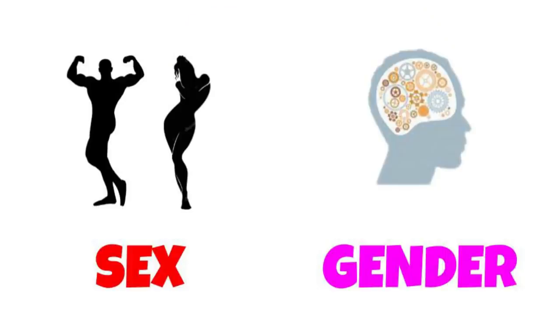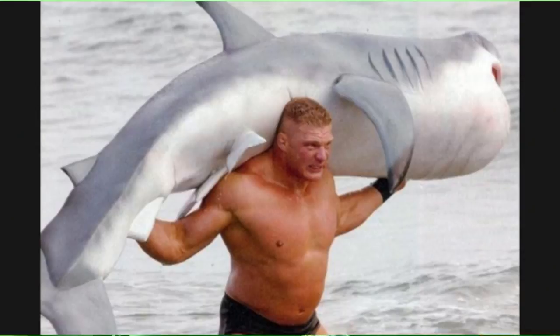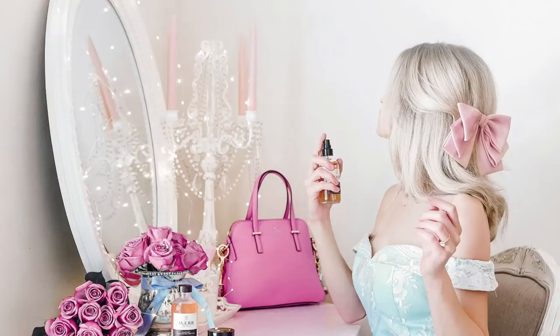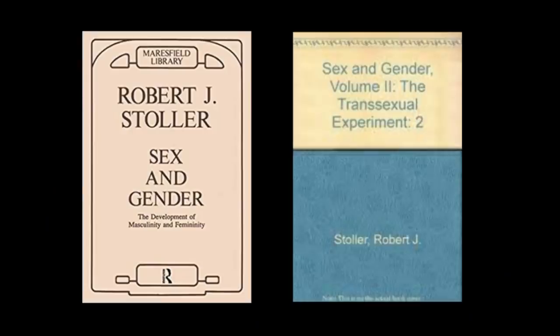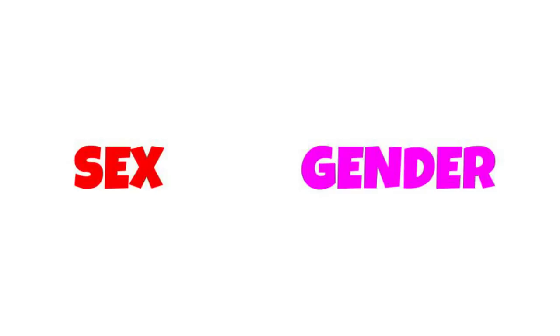This distinction between sex and gender started in the 1960s. Before, gender was tied to sex — biological men were assumed to have the psychological gender traits of masculinity, while biological females were presumed to have the psychological gender traits of femininity. Dr. Robert Stoller in 1968 began distinguishing between the terms sex and gender. Stoller wanted to explain the phenomenon of transsexuality, where a patient's biological sex and psychological gender didn't match.